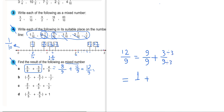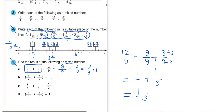3 divided by 3 equals 1, and 9 divided by 3 equals 3. So we have 1 and 1 third. As a mixed number, the answer is 1 and 1 third.